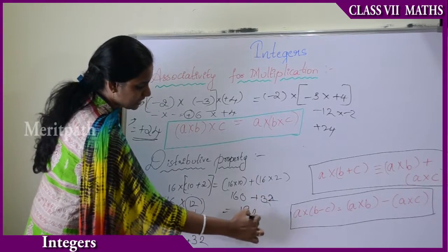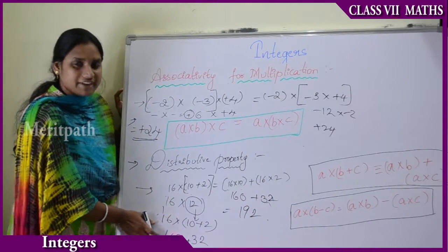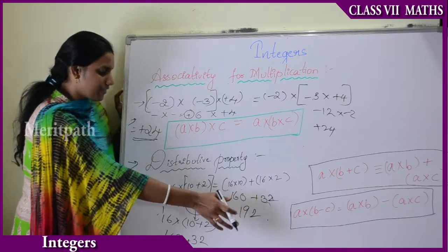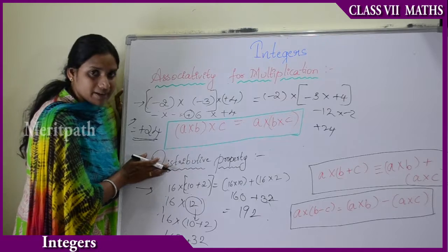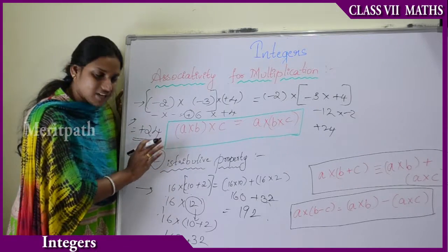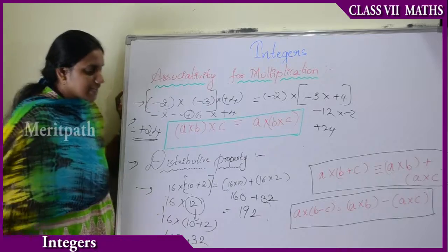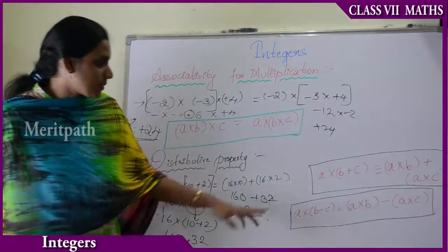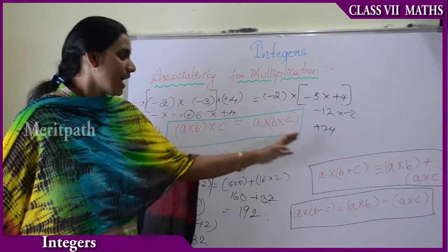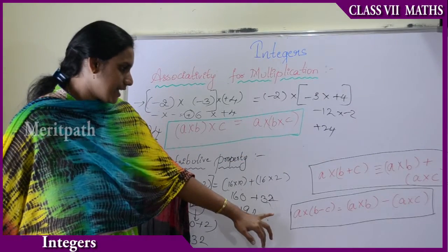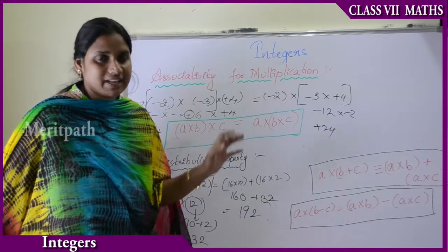We are getting the same answer on the left-hand side and right-hand side, so we can justify this as true. This is known as the distributive property, and it holds good for multiplication. The statement is: A into (B plus C) equals A into B plus A into C.